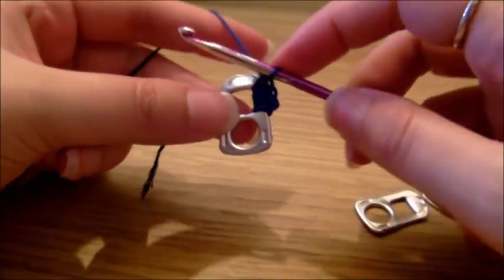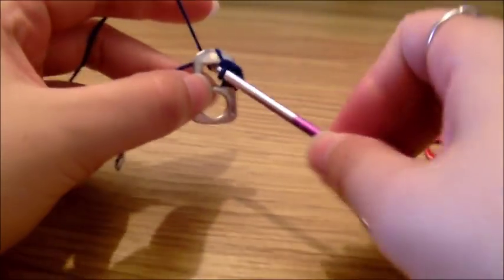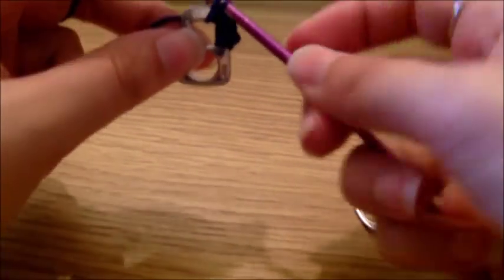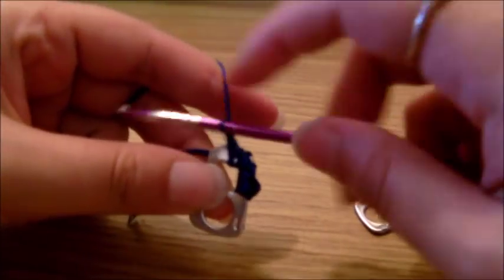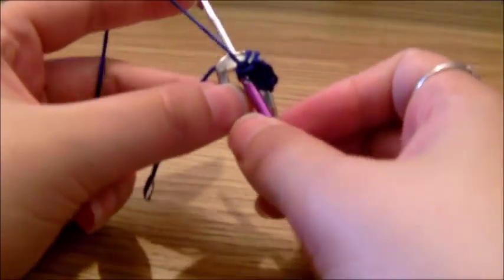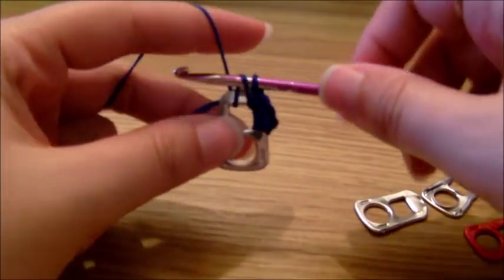Once you've done that you want to do two stitches along this top end of the pop tab. So you just do two along there.